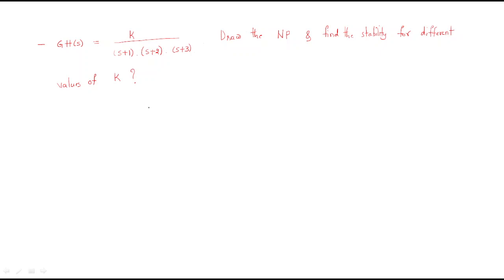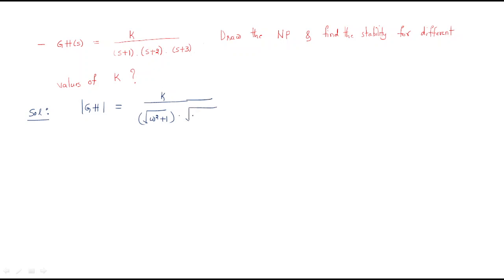So first, what is the condition? We should draw the open loop transfer function. We will take the magnitude and phase values first. The magnitude |GH| = K / [√(ω²+1) · √(ω²+4) · √(ω²+9)].